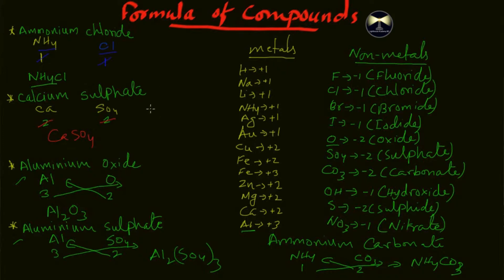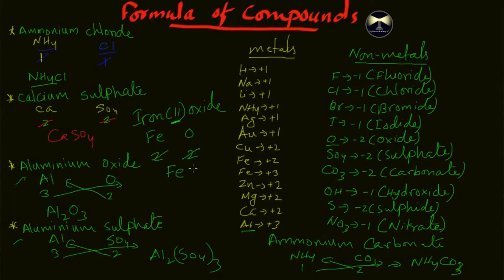In your IGCSE book you may also find compounds written as 'iron(II) oxide' using Roman numerals. For iron(II) oxide: write Fe for iron and O for oxygen. The Roman numeral II tells you the oxidation state of iron is two. Below oxygen the oxidation state is also two. Since both oxidation states are the same they cancel out, so the formula is FeO. The rule is: same oxidation states cancel out; different oxidation states require cross multiplication.